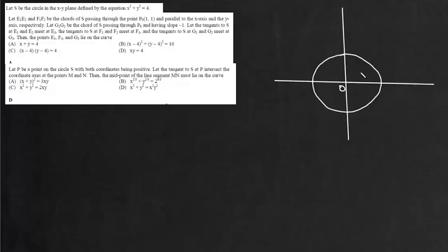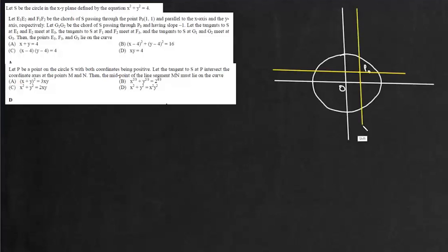Now, the point P₀ is (1,1) and (1,1) lies inside this circle. A line passing through P₀ parallel to the x-axis gives chord e1,e2, and a line parallel to the y-axis gives chord f1,f2. The line e1e2 is y = 1 and the line f1f2 is x = 1.